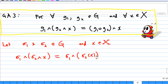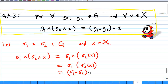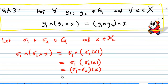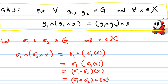The image of x under sigma2 is an element of X. Now applying the group action by sigma1, this is equal to the image of sigma2(x) under sigma1. But this is actually a composition of two mappings, which is sigma1 composed with sigma2, then applied to x. And sigma1 composed with sigma2 is the group operation of permutations. That means we have (sigma1 * sigma2)(x), so GA3 is satisfied.